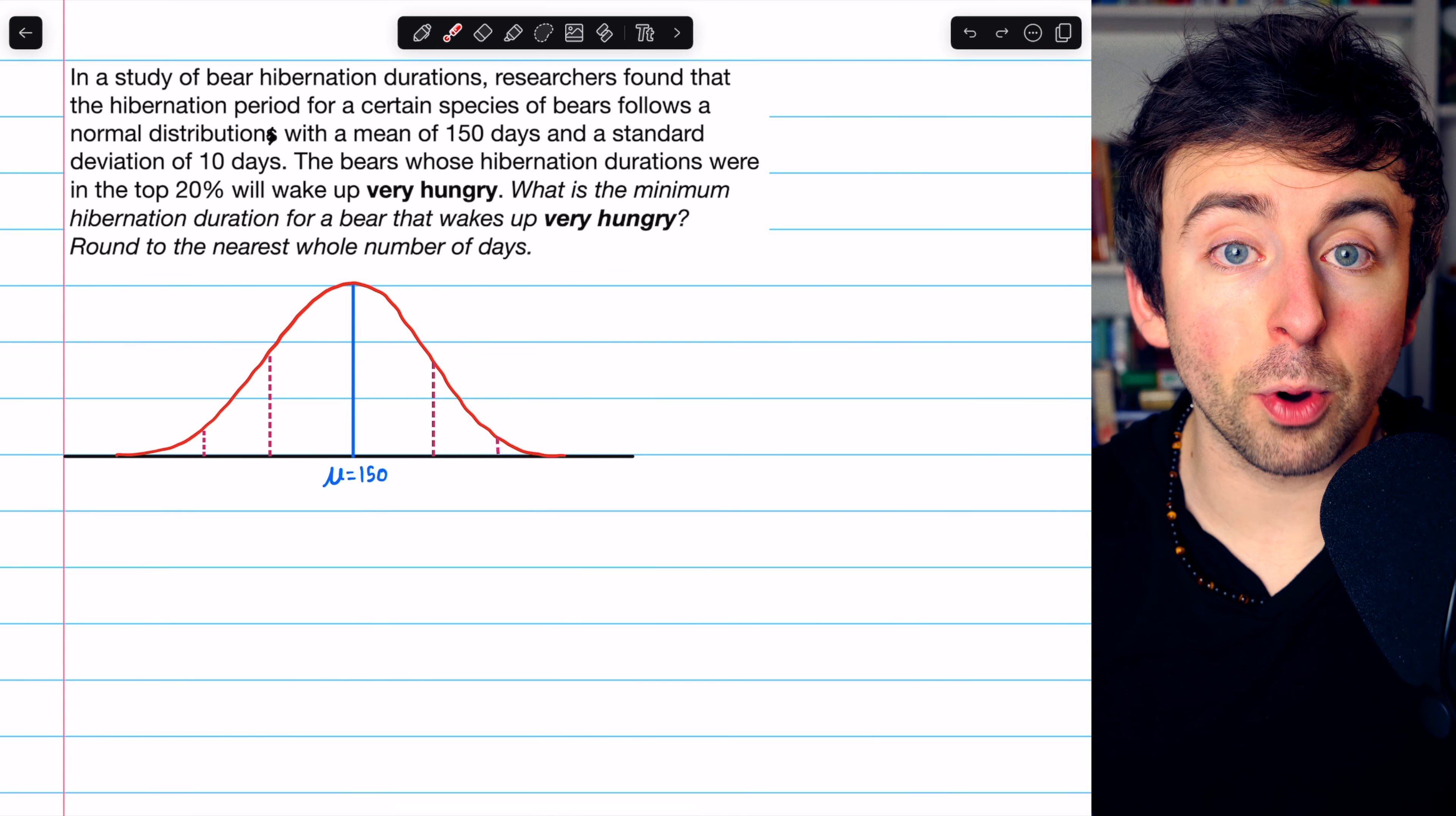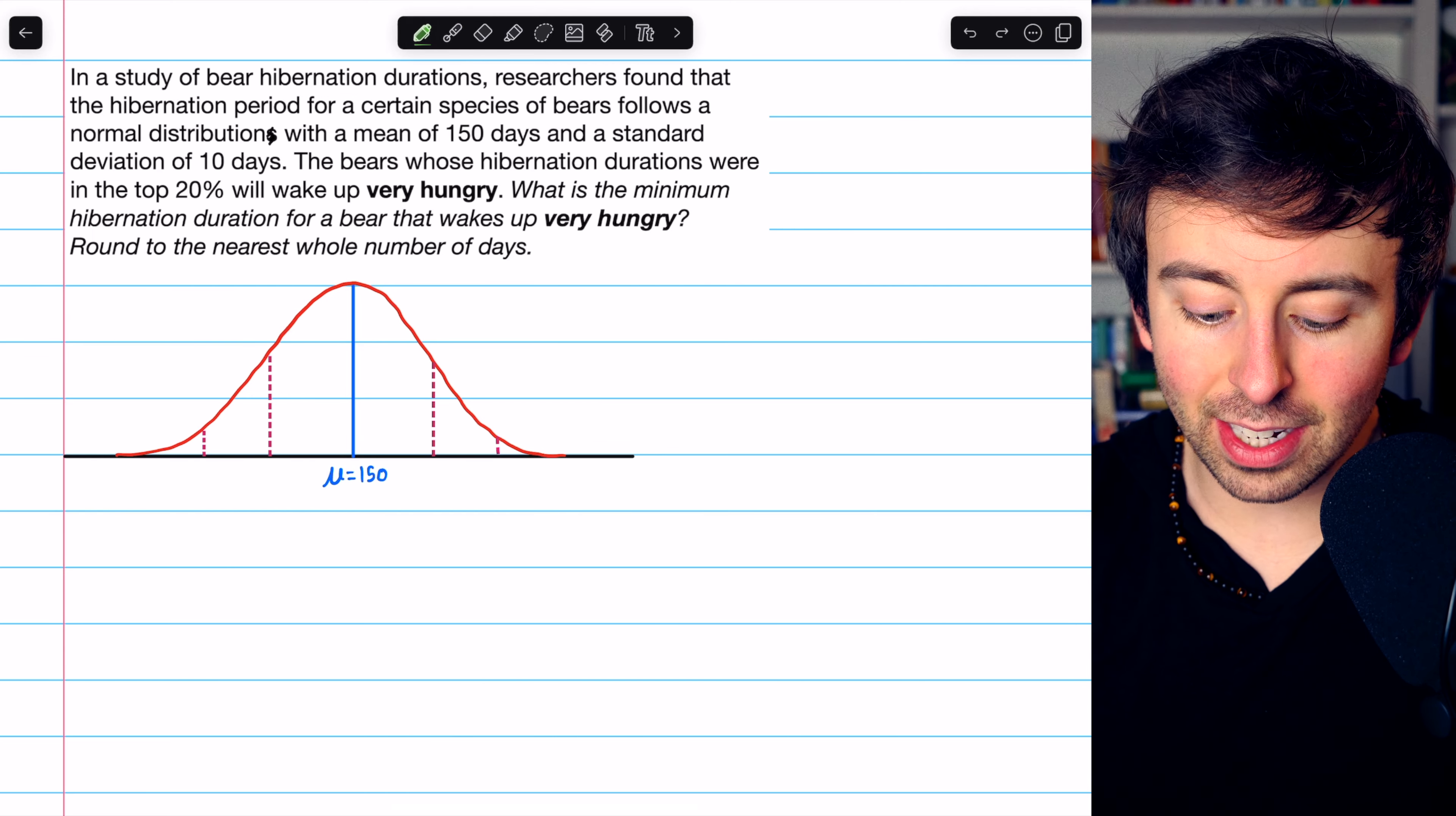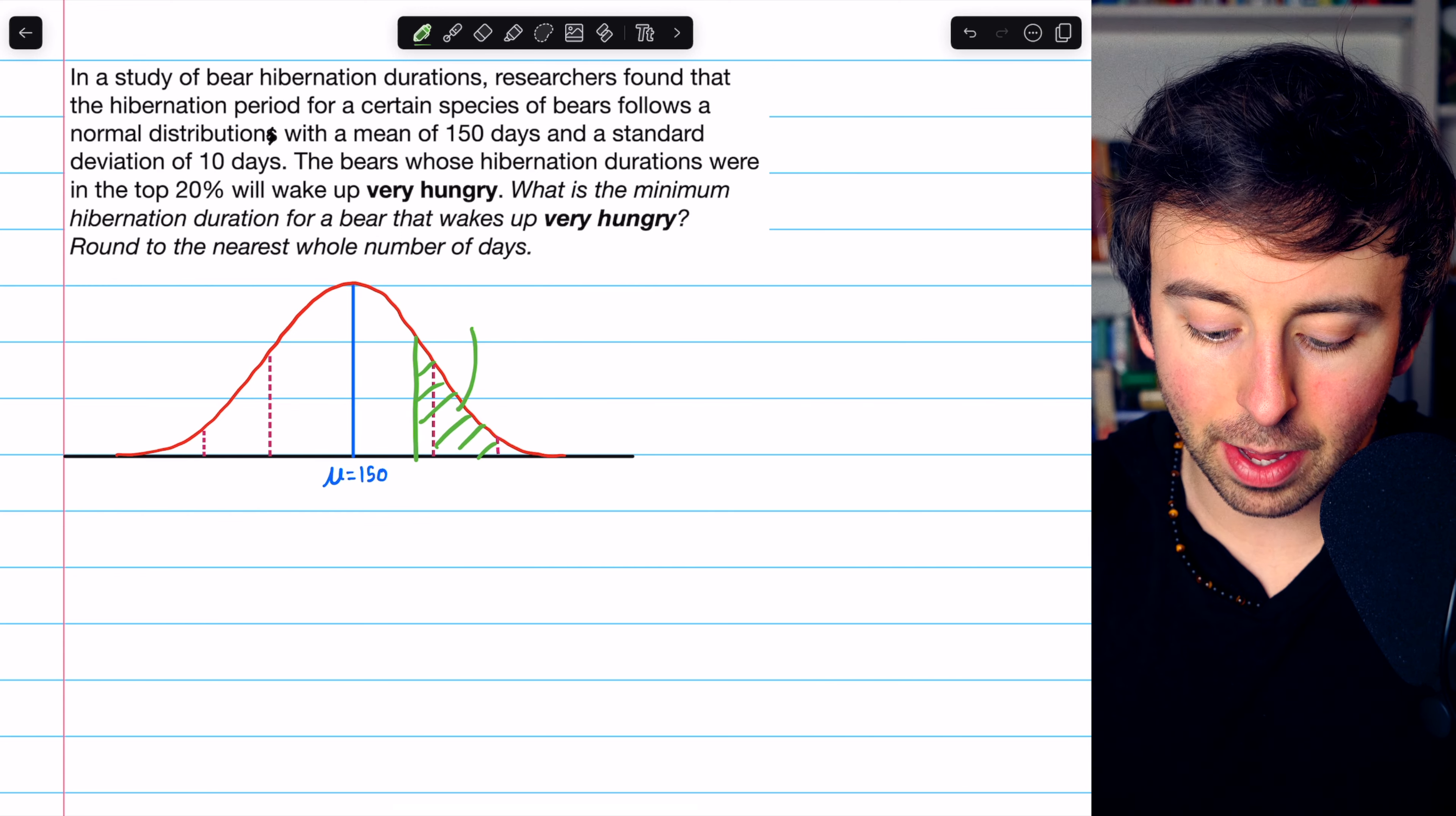Here's the picture for this problem. It is a normal distribution of bear hibernation durations with the mean at 150 days. Now we're looking for the hibernation duration that is at the top 20%. Maybe that's right about here, with 20% of the data above it.